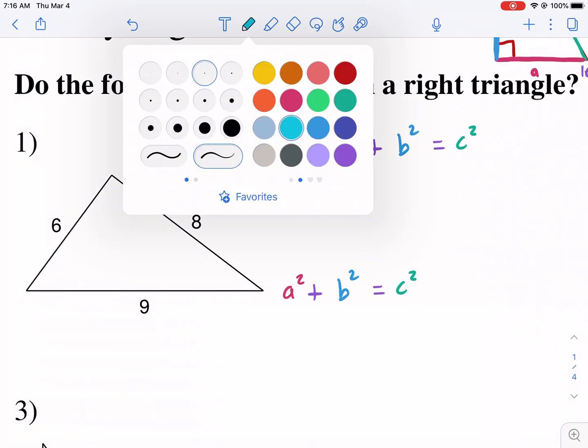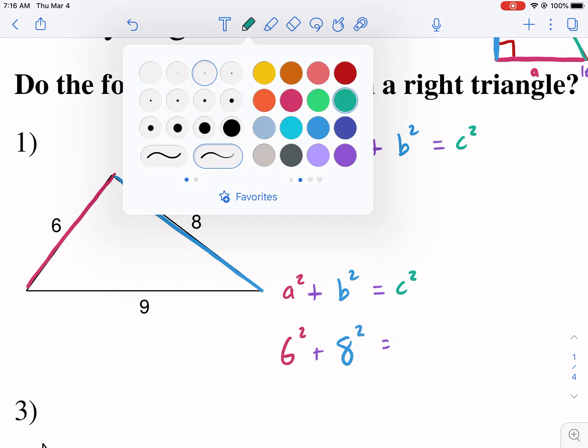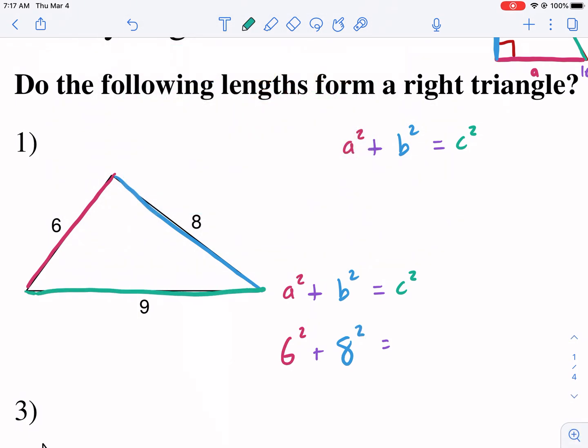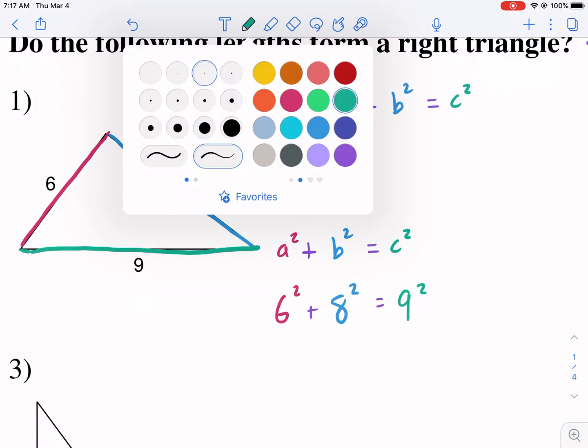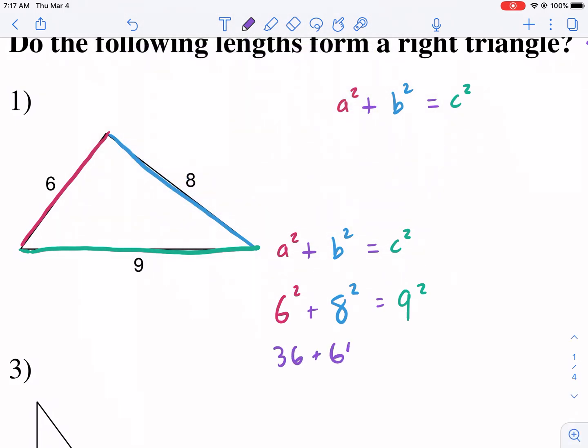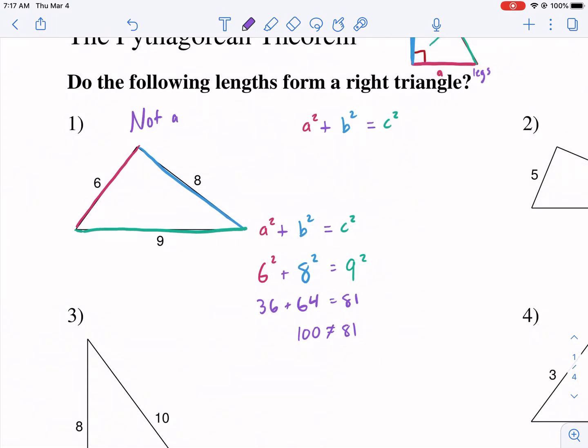We're going to choose A to be our smaller side. So that's going to be 6 squared. Plus, we're going to choose B to be this other smaller side. So that's 8 squared. And then our longest side, our hypotenuse, has to be 9 because it's the biggest number, 9 squared. So we need to see if this is true. What we need to do here is we need to do 36 plus 64. Is that equal to 81? And it is not. This is equal to 100, and that is not equal to 81. So this is not a right triangle.